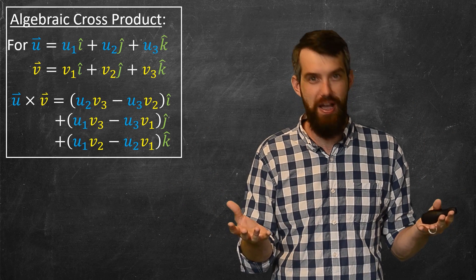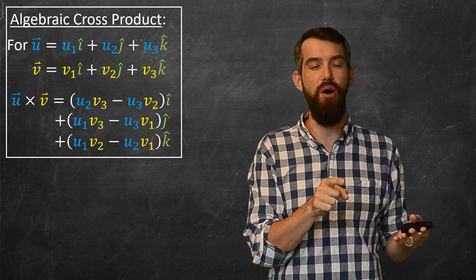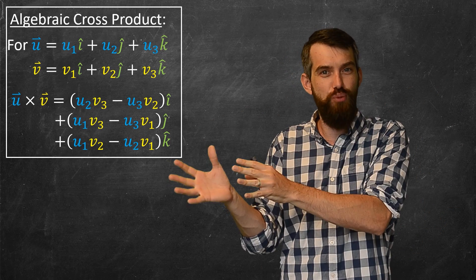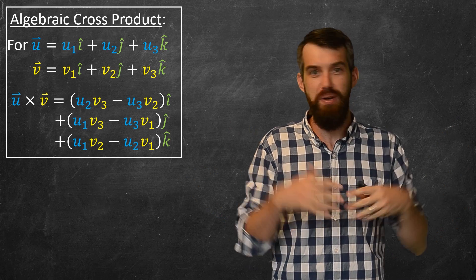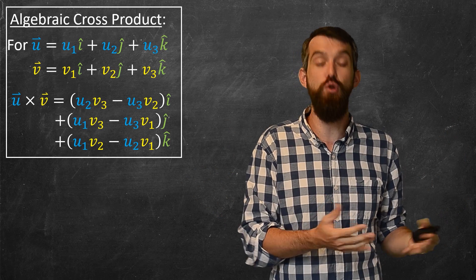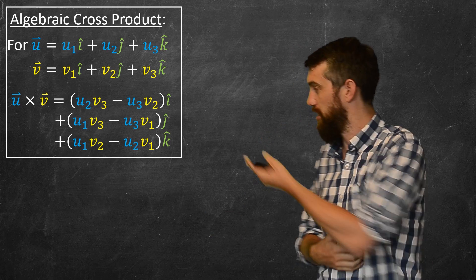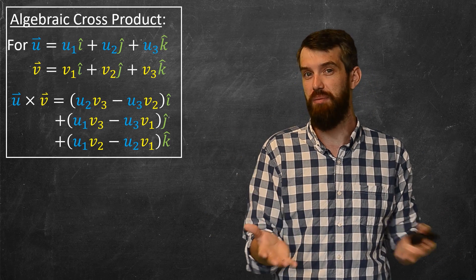What I haven't justified, and I'm not going to do in this particular video, is the connection. Why is the geometric and the algebraic versions of this cross product really the same? They are connected, and you can show this. But nevertheless, for the purposes of this video, if you want to compute that cross product that we've seen before, just plug it into that formula. It looks a little bit messy.